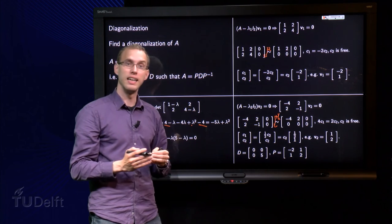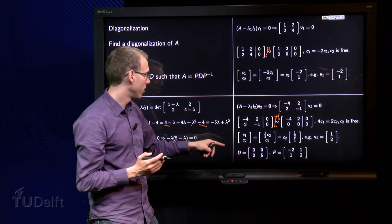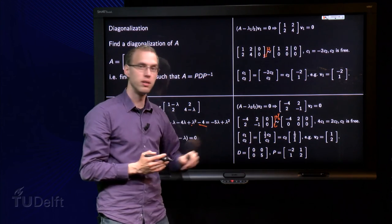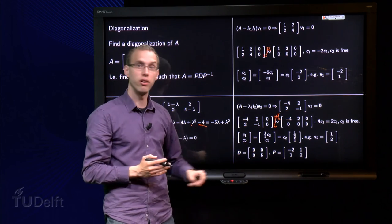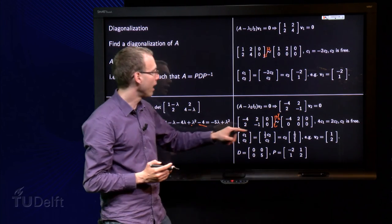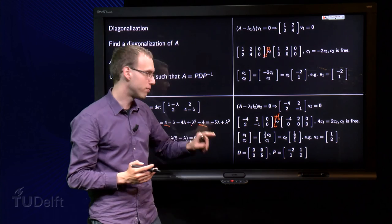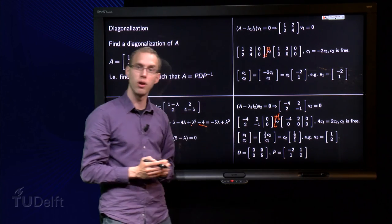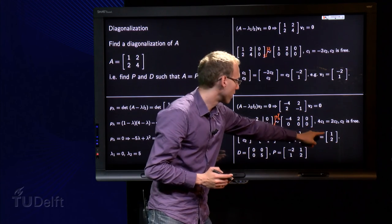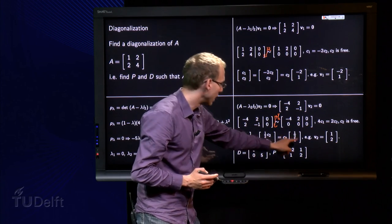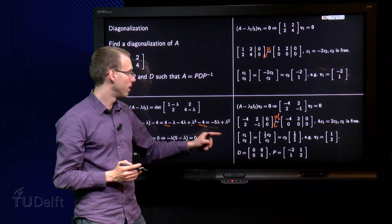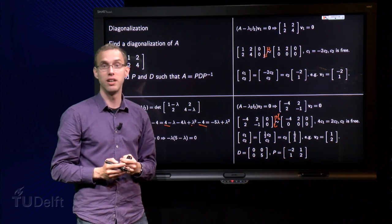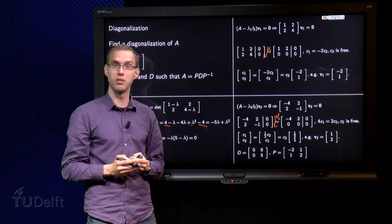And then, we are there. A diagonalization of A is possible, A equals PDP inverse, where D has eigenvalues 0 and 5 on the diagonal, and you put the corresponding eigenvectors, so the eigenvector corresponding to 0 as the first column, and the eigenvector corresponding to 5 as the second column. And you can check, of course, that P is invertible, because the determinant is non-zero.